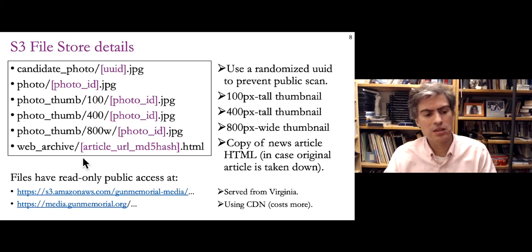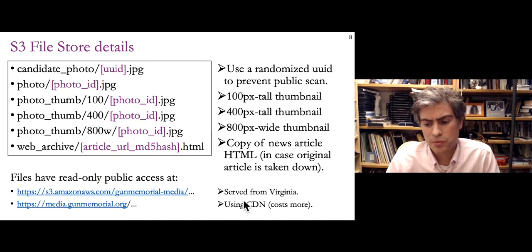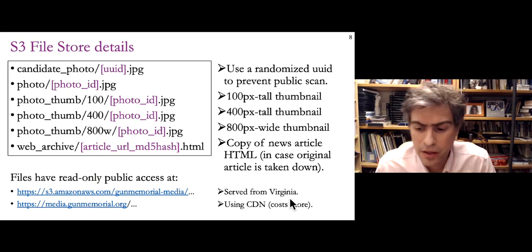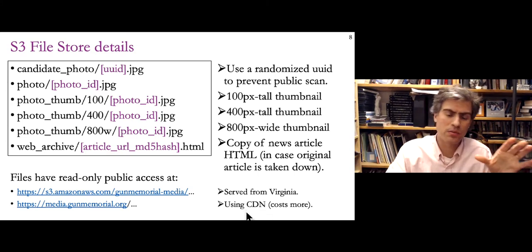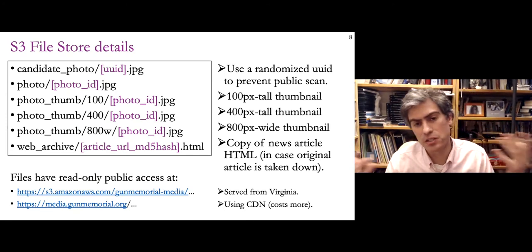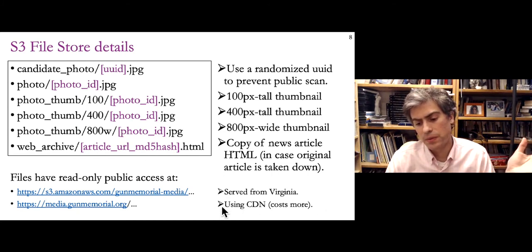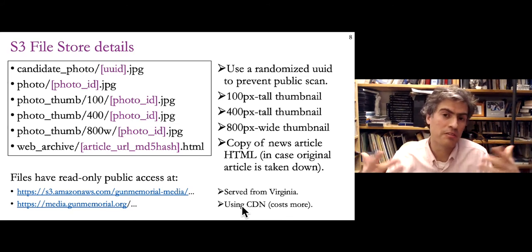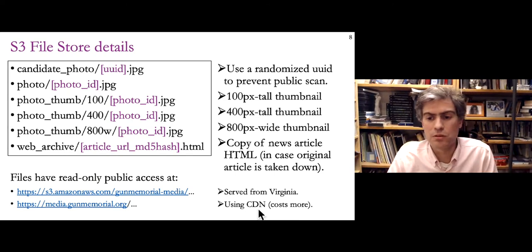Finally, copies of HTML news articles are stored in S3 in case those articles get removed. The S3 bucket is in an Amazon data center in Virginia (us-east-1 region). A CDN is used to provide cached copies of recently accessed photos in locations around the country and world — primarily the US since that's where most traffic comes from. If you're visiting from California, you download images from a nearby CDN node rather than from Virginia, since frequently visited pages have their images cached in the CDN.